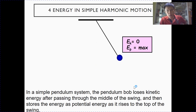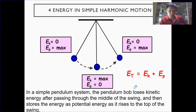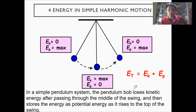So at the other end, kinetic energy is back to zero and potential energy is back to maximum. As you can see, throughout the whole motion, kinetic energy is converted to potential energy and vice versa, such that the total energy is constant. The total energy is given by the sum of kinetic energy and potential energy.